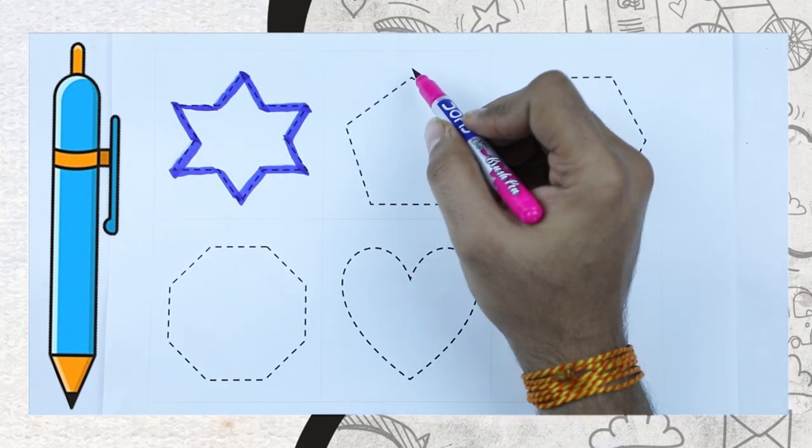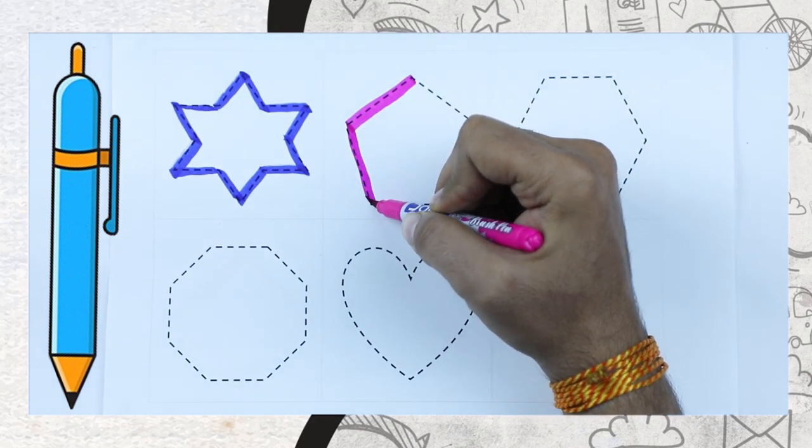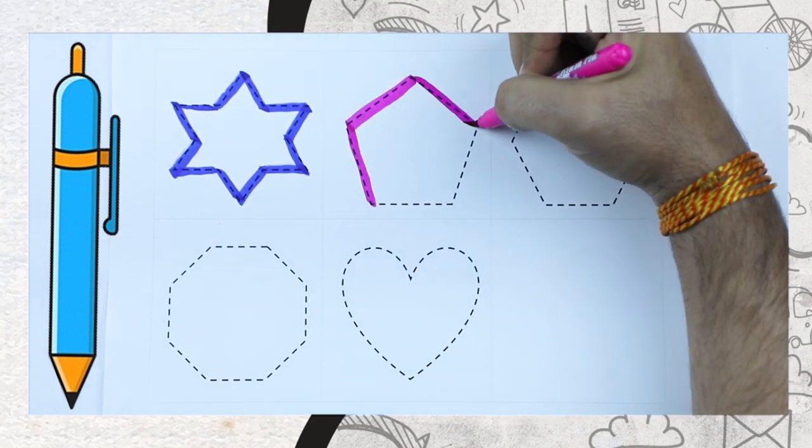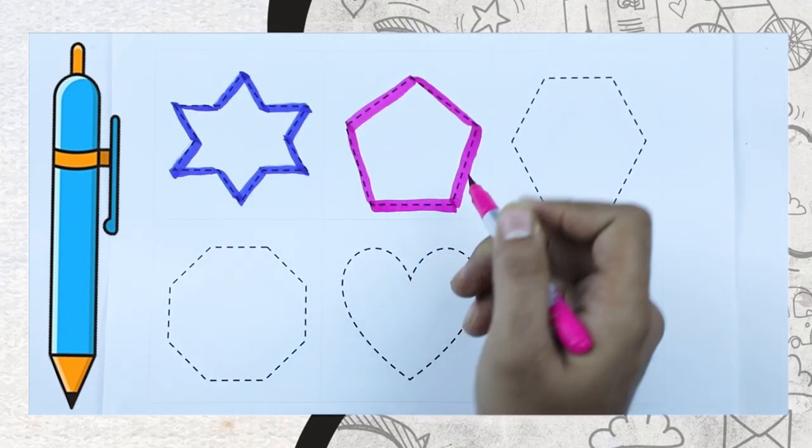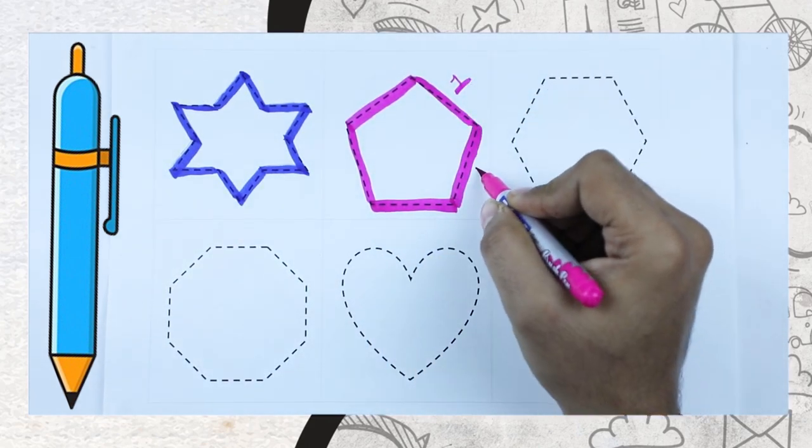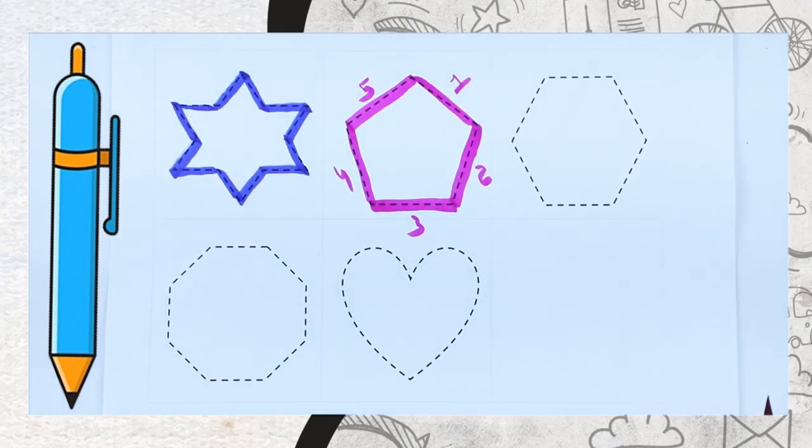Now we make pentagon. Pentagon have five lines, five surface. It's one, two, three, four, five. That's why it's called pentagon.